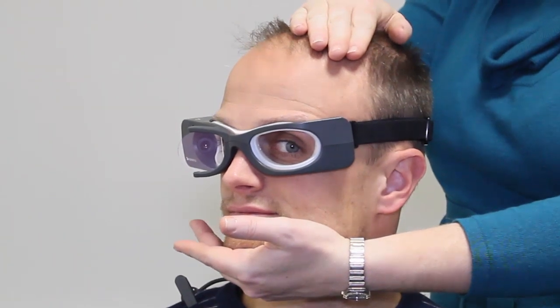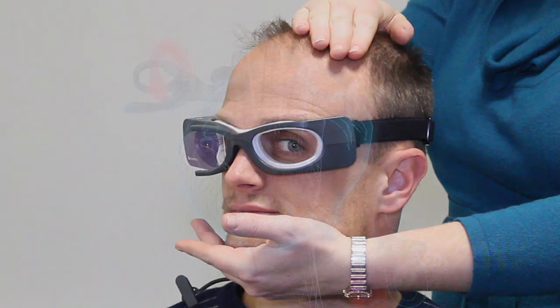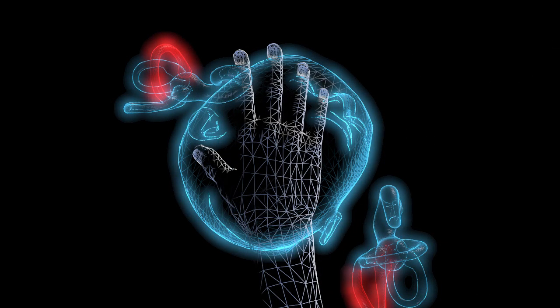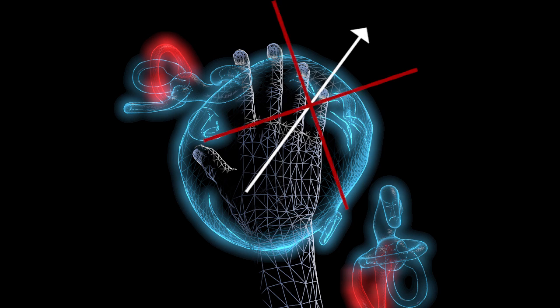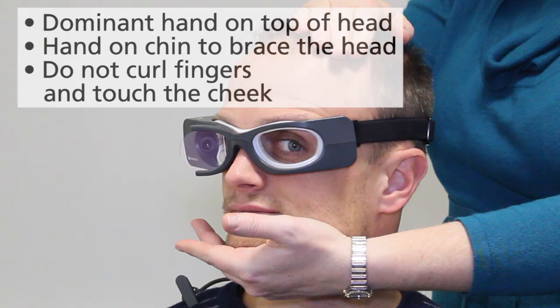Now put one hand on the chin and the other hand on top of the head. The hand on top should be your dominant hand — if you write with your right hand, your right hand goes on top of the head, and your left hand goes under the chin. Make sure your fingers are facing the fixation dot so you're directing your head impulses towards the fixation dot and not towards the nose. The hand under the chin should just be bracing the chin — don't curl your fingers up the side of the cheek, as any movement of the cheek could move the goggle.